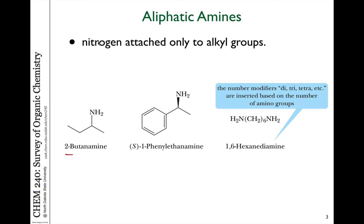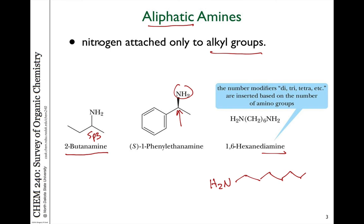For example, 2-butanamine is attached to an sp3-hybridized carbon. This is what we refer to as an aliphatic amine, attached to only alkyl groups. This diamine also has nitrogen attached to only alkyl groups — there's a nitrogen on both ends of a 6-carbon chain — and this would be an aliphatic amine as well, because they're attached to sp3-hybridized carbons.